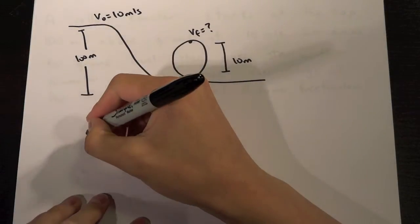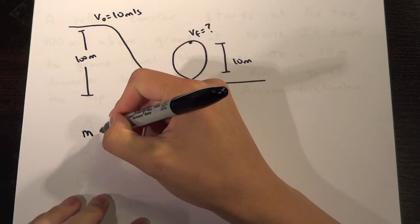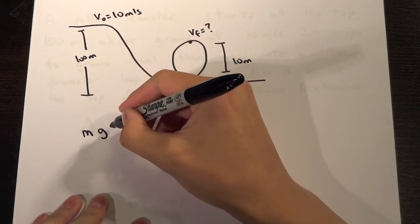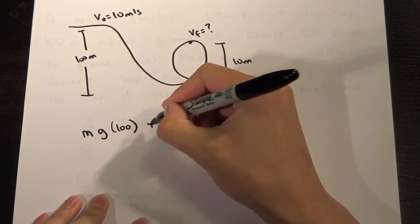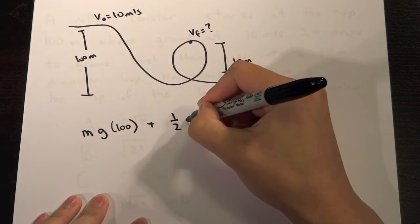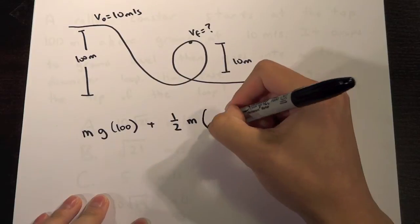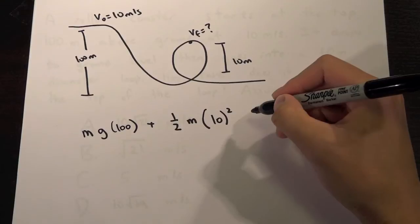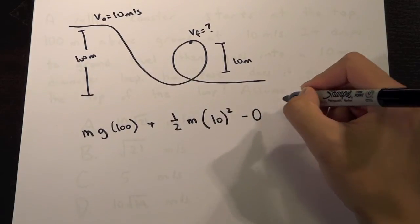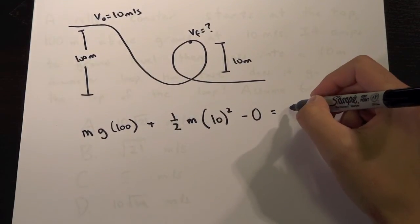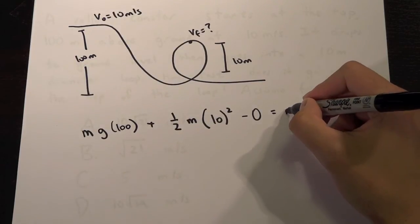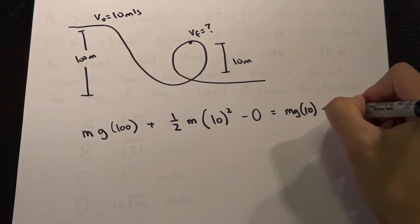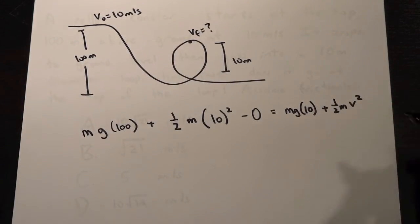We remember that potential energy is MGH, right? So MGH and it's starting off at a height of 100 meters. And then kinetic energy is 1/2 MV squared, 10 meters per second. And it was frictionless, so we say it's minus zero. And so the final potential energy is going to be MGH at 10 meters, and 1/2 MV squared. And then V is what we're trying to find, right?